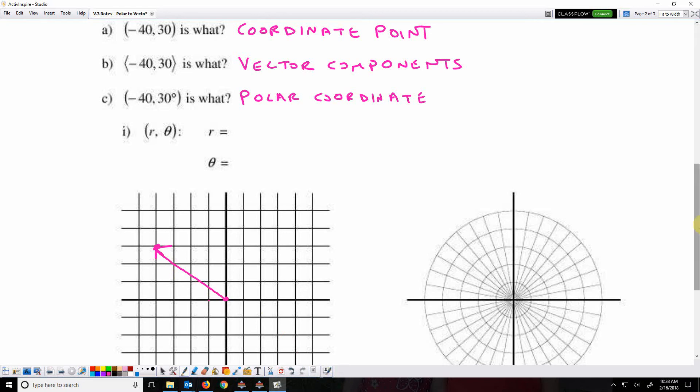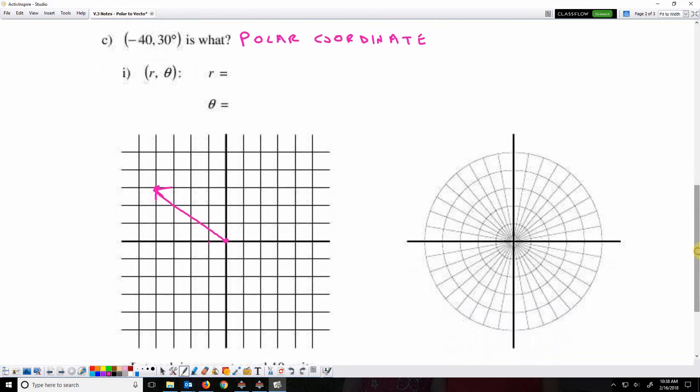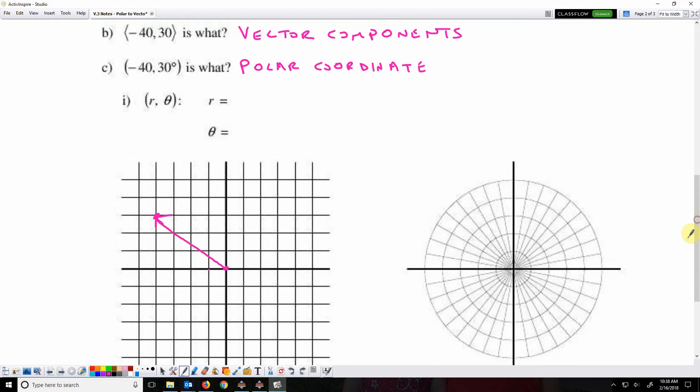When you graph polar coordinates, it's on a graph like this, it's circular. So that negative 40 would be the length of a radius of one of these circles.